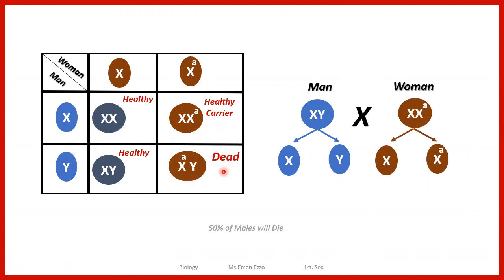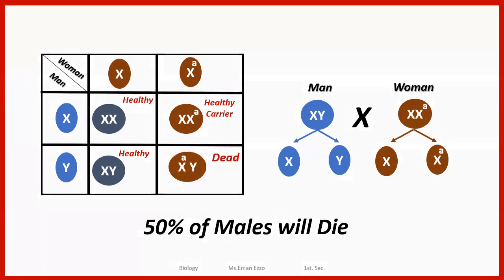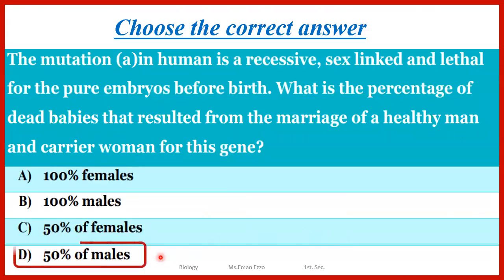So 50% of the males will die. We have two males resulting from this crossing: one is healthy and one dies. So 50% of the males will die. The question is asking about the percentage of dead males.